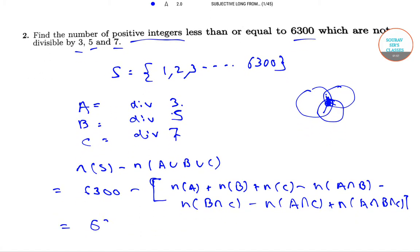Which is equal to 6300 minus 6300 by 3. Why divided by 3? Because in our set S, every third element is divisible by 3. Similarly, every fifth element is divisible by 5.